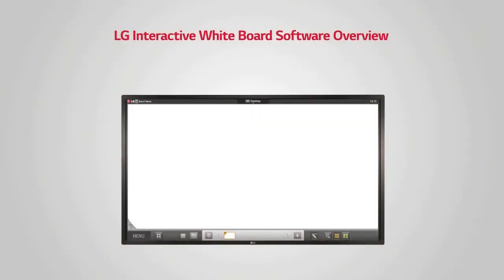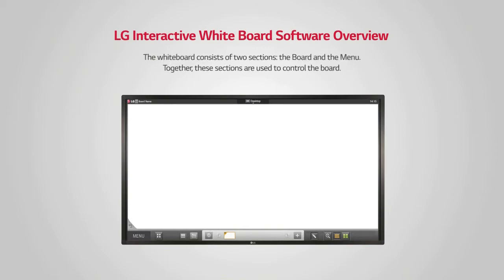LG's interactive whiteboard IWB landing page. As you can see, the whiteboard consists of two sections: the board and the menu. Together, these sections are used to control the board. The board refers to the main area of the screen, and the menu refers to the area of the screen below the board.